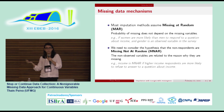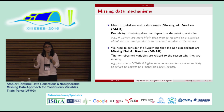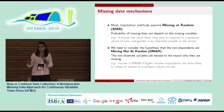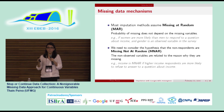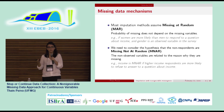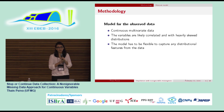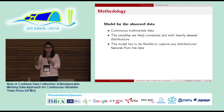We need to consider the hypothesis that non-respondents are missing not at random, meaning the non-observed variables are related to the reason why they're missing. For example, income would be missing not at random if higher-income respondents tend to refuse to answer the income question — we don't observe the income for these individuals, and the reason is related to the missing values. This is a valid hypothesis in our dataset, and that was our motivation.